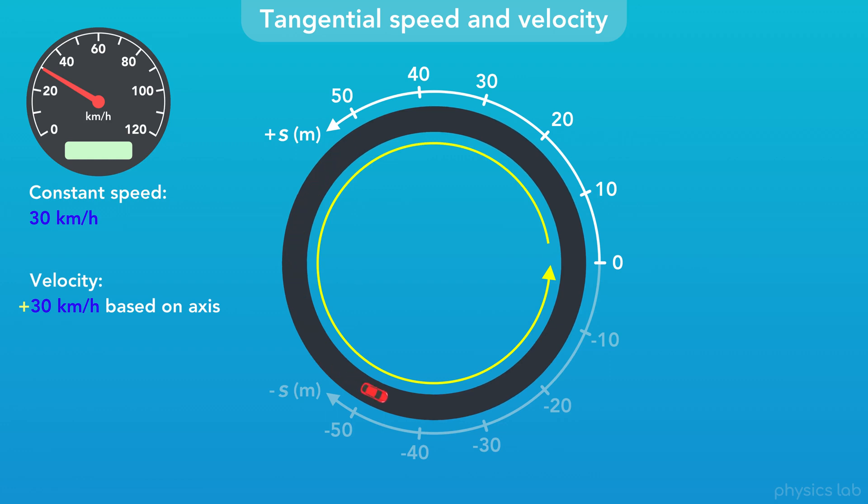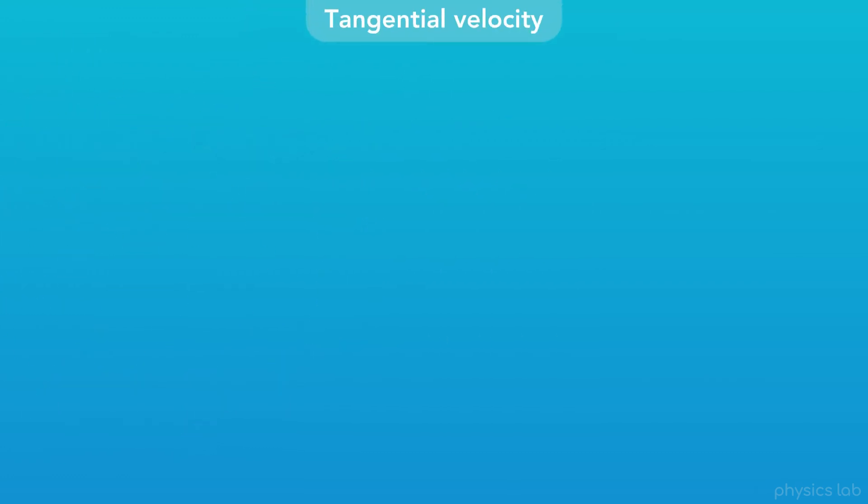When talking about direction, there's another thing we need to cover. Why do we call this the tangential velocity? It comes from geometry. For any point on a curved line or a circle, a tangent line is a line that passes through that point, and matches the slope or the curvature of the line at that point.